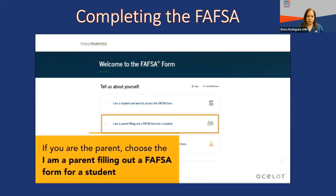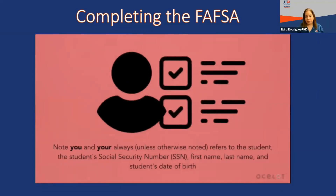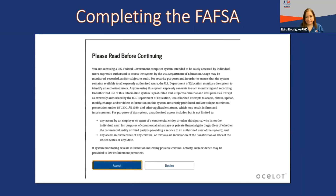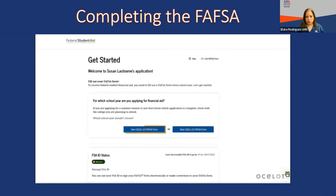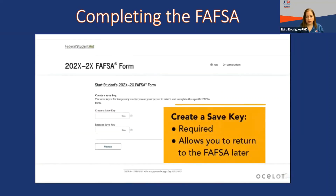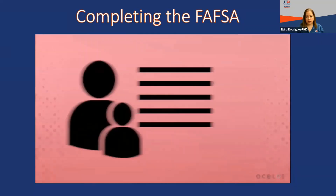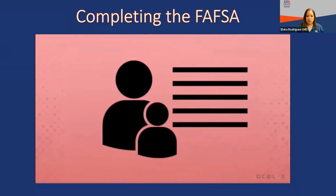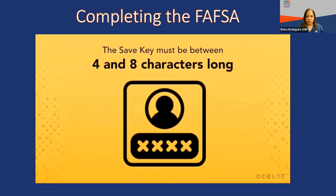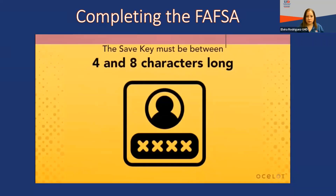Note that 'you' and 'your,' unless otherwise noted, refers to the student — the student's social security number, first name, last name, and date of birth. Read and accept the authorization information on accessing a U.S. federal government computer system. Choose 'Start 2022-23 FAFSA form.' Next, you will be required to create a save key. The save key allows you to return to an application or correction later if you need to stop and save your work. It also allows you to share access to your application if your parent needs to add information or sign the FAFSA. The save key must be between four and eight characters long, using any combination of numbers and uppercase or lowercase letters.